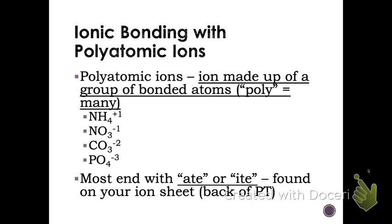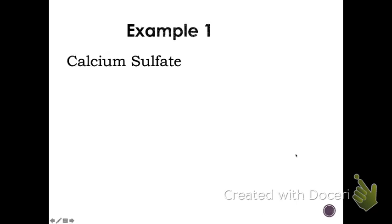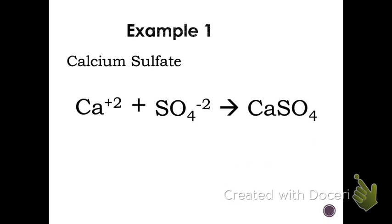We're going to start off writing the formulas. The first one we're going to look at is calcium sulfate. When we're given a name like this, we're going to look up the two ions on our ion chart. Calcium is in group two. It has a plus two charge. Sulfate is SO4 with a minus two charge. Now we want to make sure that the charges cancel out. The answer is one. We need one of each. We're going to write it CaSO4.